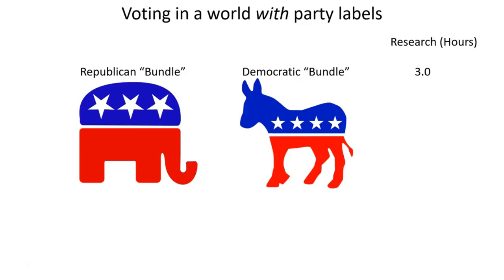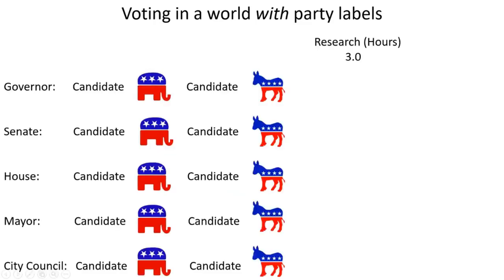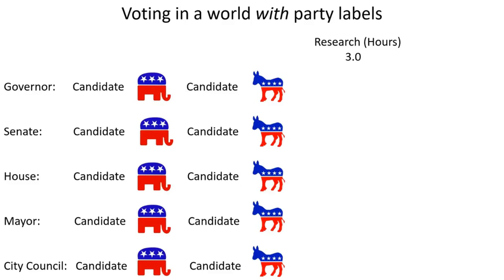But let's say this citizen does the research and decides they like the Democratic bundle. There's an election coming up with candidates for governor, senate, house, mayor, and city council — a Democratic candidate and a Republican candidate each. How hard is it going to be for this citizen to vote? Not at all. They put in three hours of research, decided they liked the Democratic bundle more, and so when they look at this ballot, it's easy — they just vote for all the Democrats, go down the ballot, clink clink clink clink clink. Done.